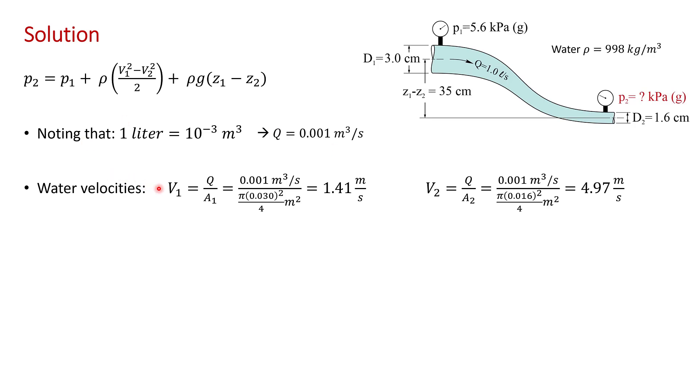Here, I've used that flow rate to calculate the inlet velocity and the outlet velocity. The inlet velocity V1 is just the volume flow rate divided by the cross-sectional area at the inlet, so the volume flow rate divided by pi D1 squared divided by 4, which gives 1.41 meter per second.